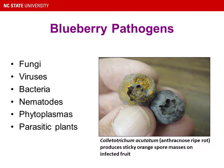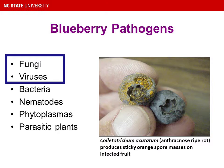Aside from cultural problems or environmental issues, blueberry disease is caused by pathogens. These include fungi, viruses, bacteria, nematodes, phytoplasmas, and parasitic plants. Some of these are quite rare on blueberries; others are really common. Most of our time in this session will be spent on the fungi, with a little bit of time also on viruses. Those seem to be the two most common categories of pathogen on blueberry in the southeast.